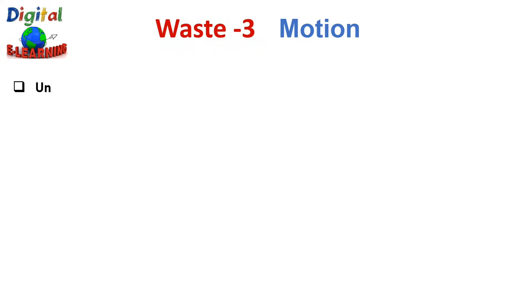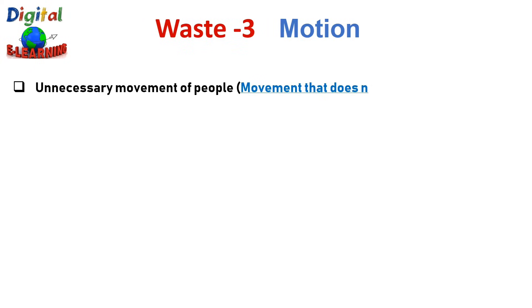The third category of waste is Motion — the unnecessary movement of people that does not add any value. This kind of waste includes movement of employees or machinery that is complicated and unnecessary. It can cause injuries, extended production time, and more. In other words, arrange a process where workers need to do as little movement as possible to finish their job.